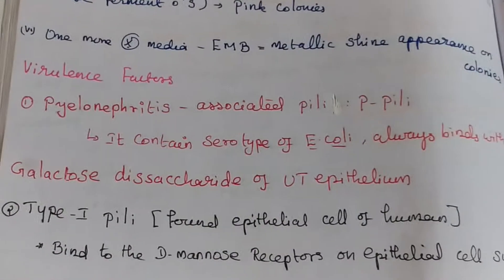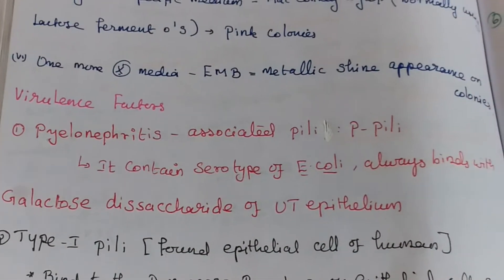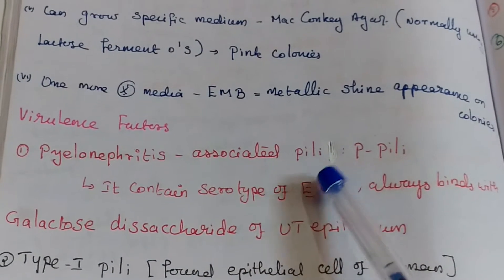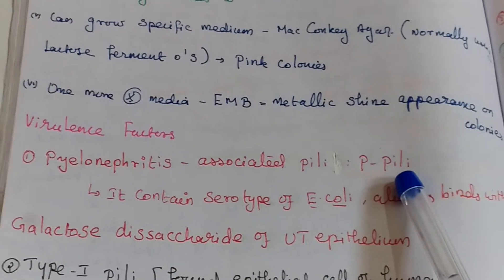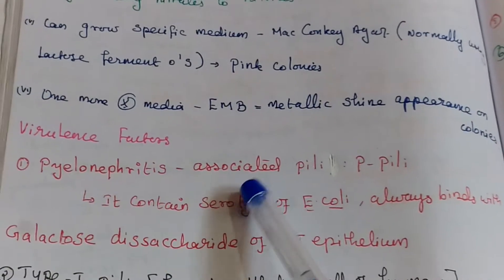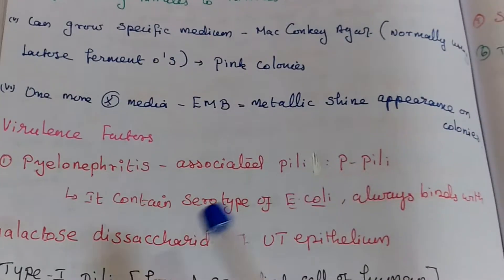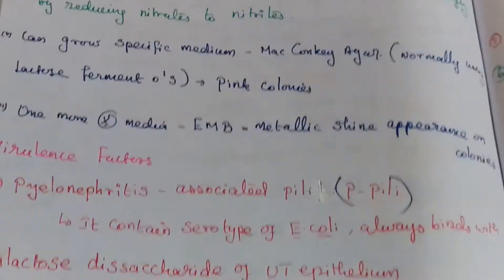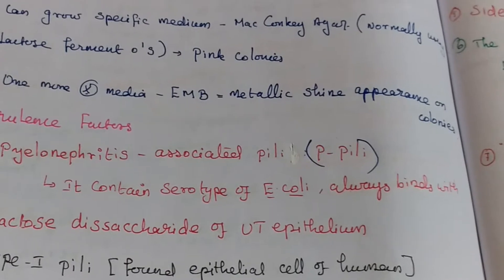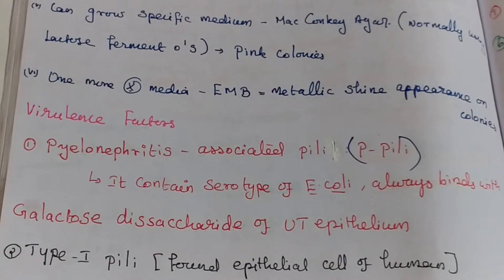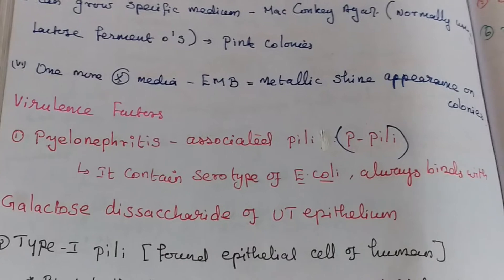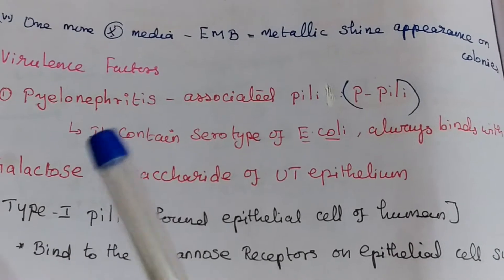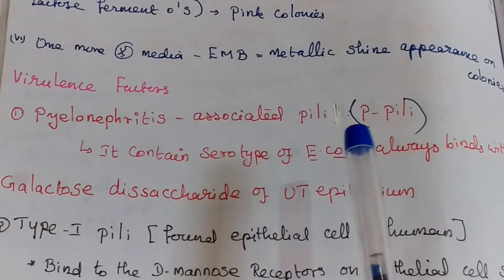Now we look at virulence factors. The first virulence factor is pyelonephritis-associated pili, short form P pili. This is associated with O type of E. coli. It always binds with galactose-digalactoside on the urinary tract epithelium.